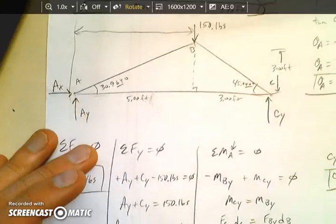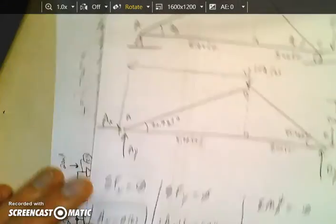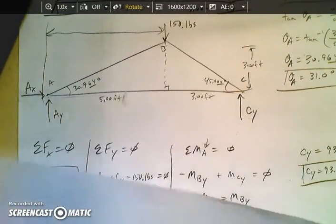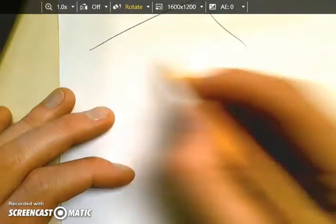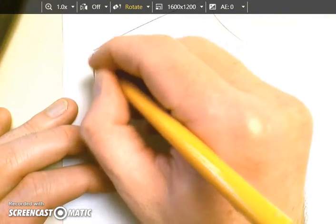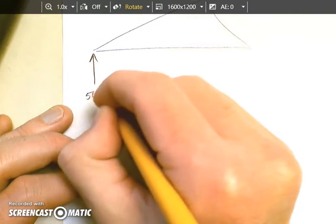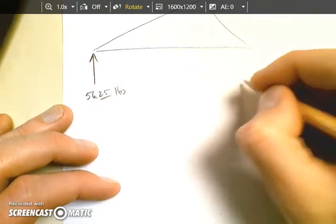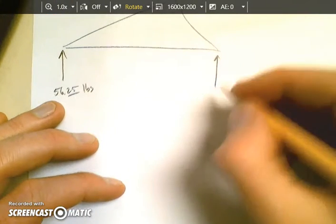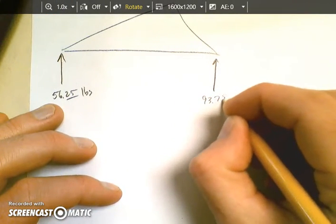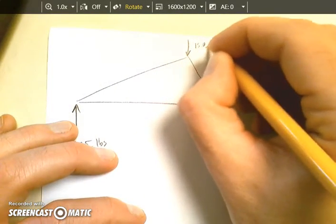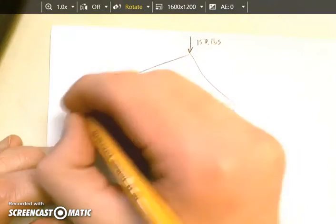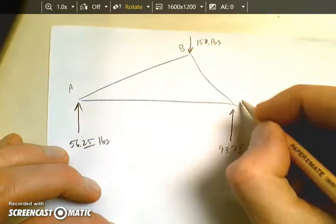So that right there is solving for the reaction forces. So if I'm going to redraw my free body diagram for this. I'm going to redraw it. I have an upward force of 56.25 pounds at A. I've got an upward force over here of 93.75 pounds. I have a downward force of 150 pounds. This is A, B, and C.